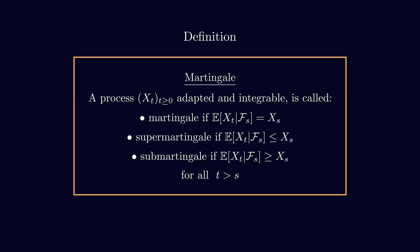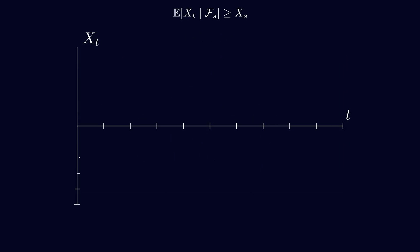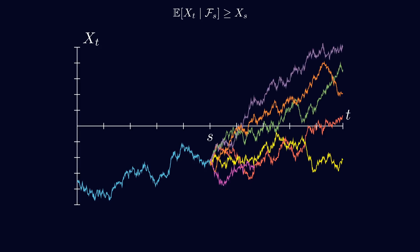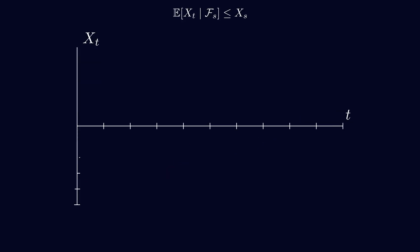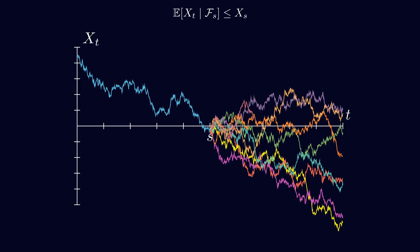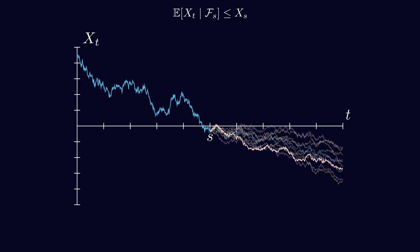Also, we can define submartingale and supermartingale. Submartingale is when the process on average increase and supermartingale is when the process on average decrease. We can also do some simulation to visualize what is super and submartingale. And also, I would like to emphasize that like in the previous video, I'm doing those animations using a very specific type of stochastic process, that is Brownian motion. So, in theory, here you could have germ or crazy stochastic process, but just to make it more visual, I use Brownian motion.